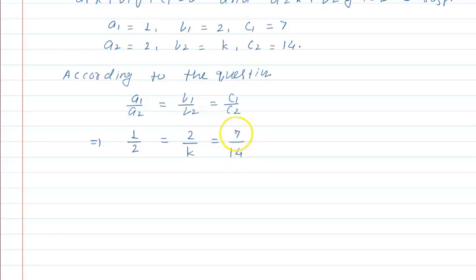We can cancel 7 and 14 to get 1 upon 2. So we have 1 upon 2 is equal to 2 upon k. Now cross multiply: k is equal to 4.